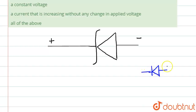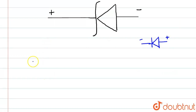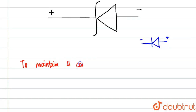So why is the Zener diode connected in reverse bias? This is a theoretical question — it is to maintain a constant voltage across two points.